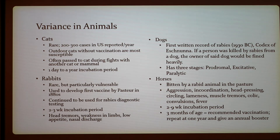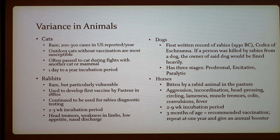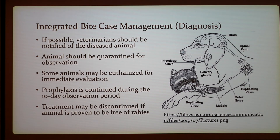For horses, rabies usually occurs when they are bitten by a rabid animal in the pasture. Symptoms include aggression, incoordination, head pressing, circling, lameness, muscle tremors, colic, convulsions, and fever. The incubation period is two to nine weeks. Vaccination is recommended starting at three months of age, repeated at one year, with annual boosters.